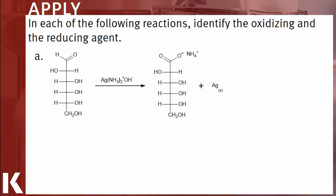Beginning with part A, start by taking a look at the reactant and comparing it to the related product. The initial reactant is a six-carbon sugar, and carbon one of the sugar is changed from an aldehyde, which has two bonds to oxygen, to a carboxylic acid, effectively containing three bonds to oxygen. An increase in bonds to oxygen means the sugar is being oxidized and is acting as a reducing agent.